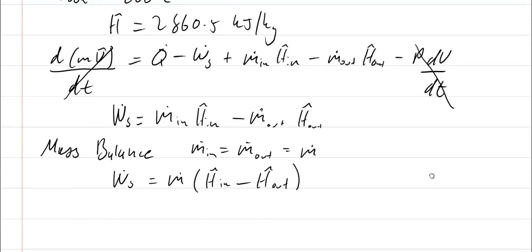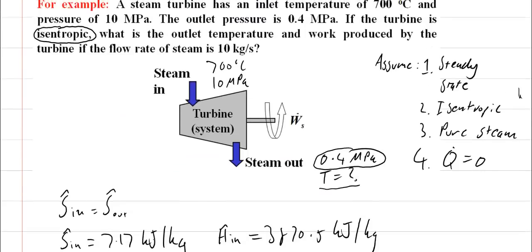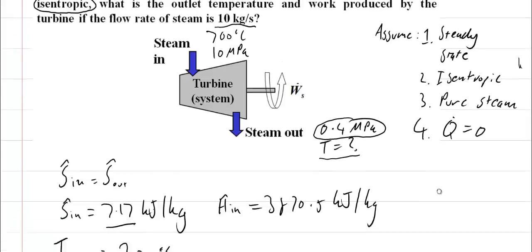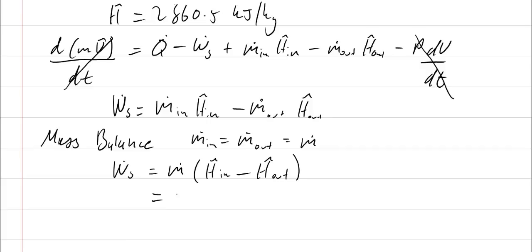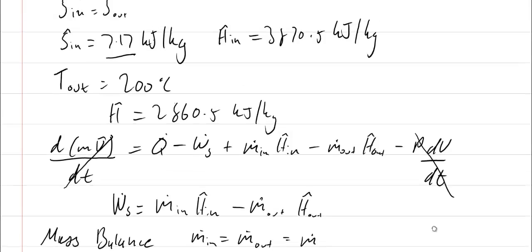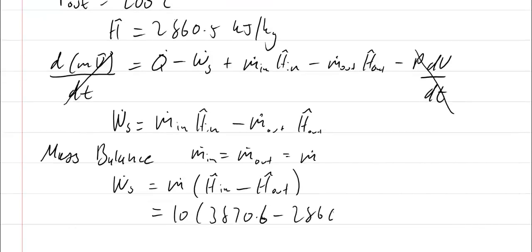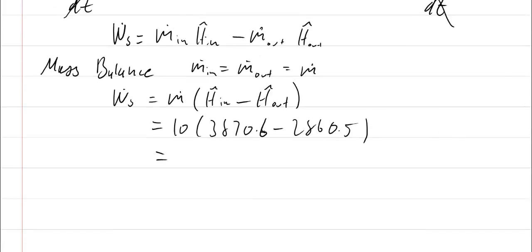I know what those H values are and I also know what my mass flow is. My mass flow is 10 kilograms per second, so 10 times 3870.6 minus 2860.5. Taking these away from each other gives ten thousand one hundred kilojoules per second, and that's equal to a 10.1 megawatt turbine.